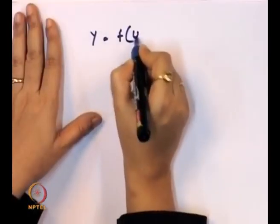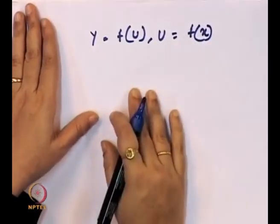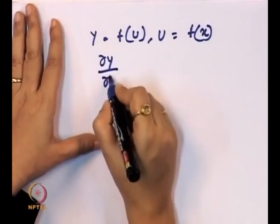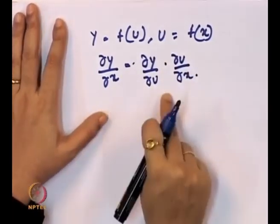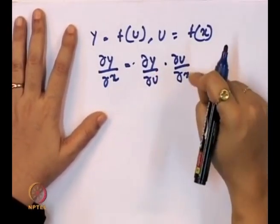Now we see the last category: when the function is a function of a function — the chain rule. We discussed constant functions, power functions, sums and differences, products, and quotients. Now suppose y = f(u) and u = g(x). In this case, dy/dx = (dy/du)·(du/dx), which has two terms: dy/du and du/dx.